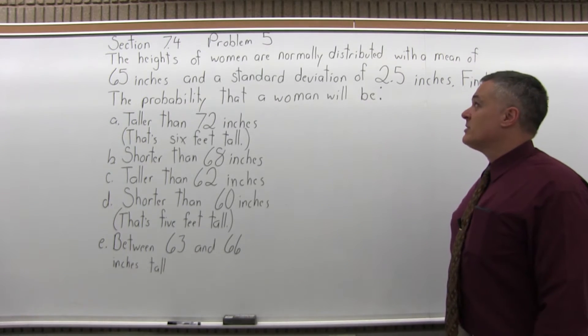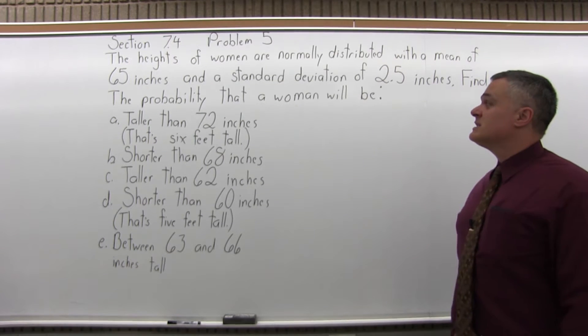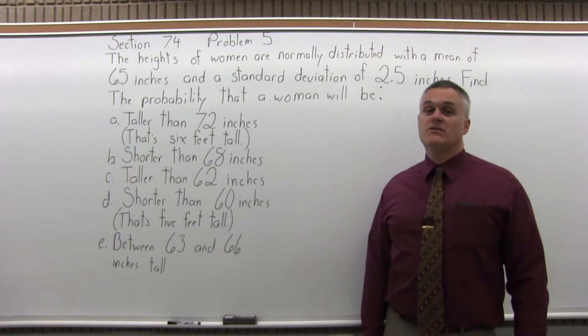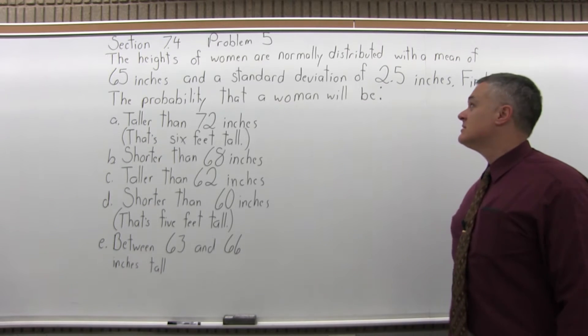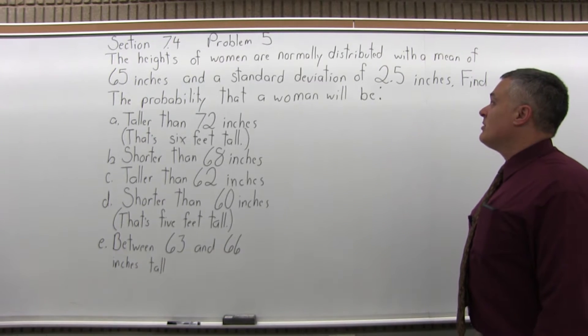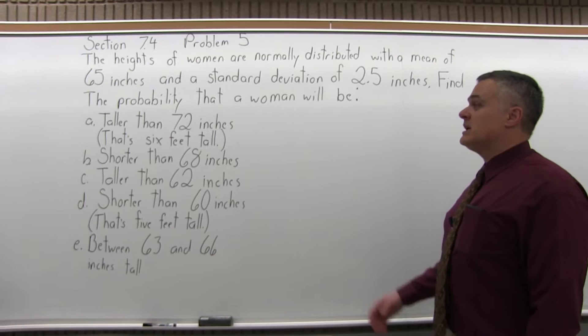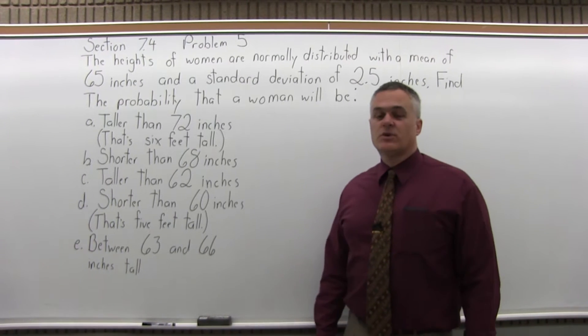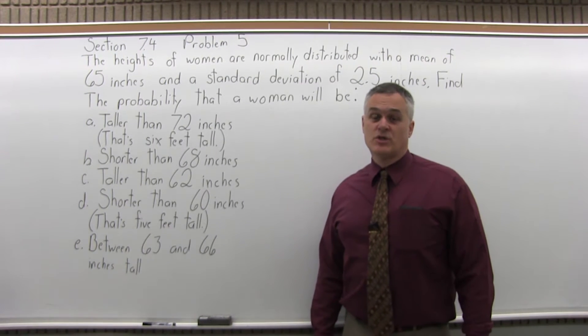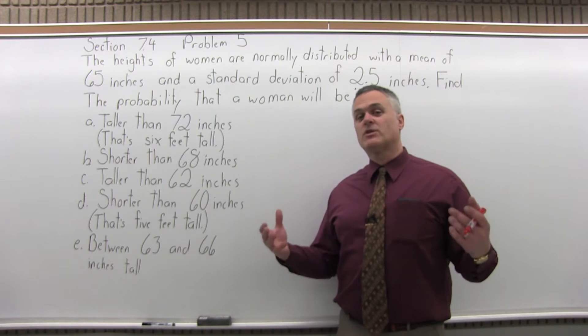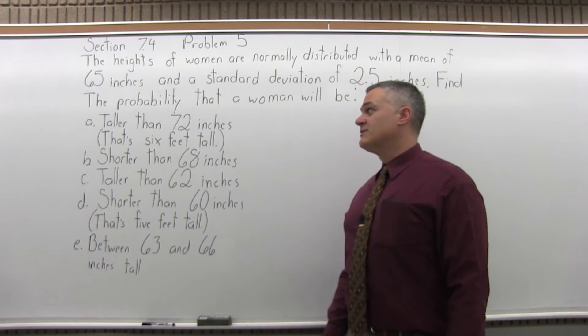It says the heights of women are normally distributed with a mean of 65 inches and a standard deviation of 2.5 inches. Find the probability that a woman will be taller than 72 inches tall. So that's 6 feet tall. What's the probability that a woman will be taller than 6 feet tall?